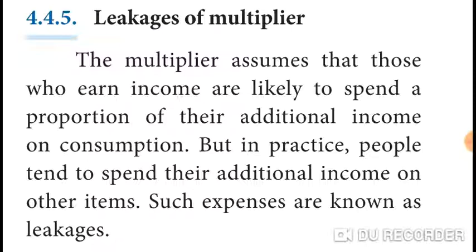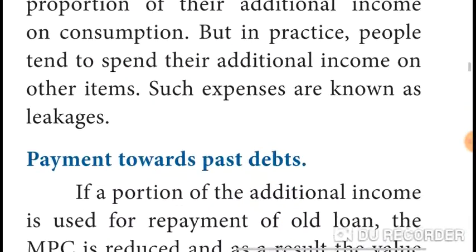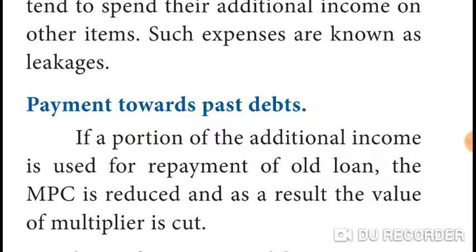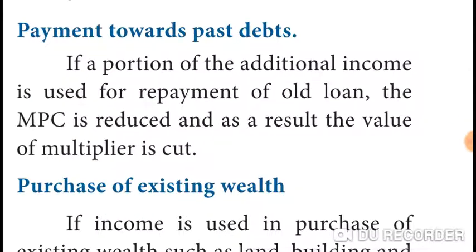What about leakages of the multiplier? First, payment towards past debts. If a portion of the additional income is used for repayment of an old loan, then the marginal propensity to consume — that is, MPC — is reduced, and as a result the value of the multiplier is cut.